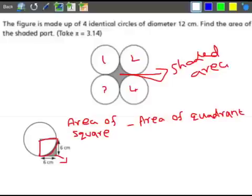We know the diameter is 12 centimeters, so from here to here is the radius. So area of square would be 6 into 6. Area of quadrant, the formula of area of quadrant is 1 by 4, which is quarter, into pi r squared.